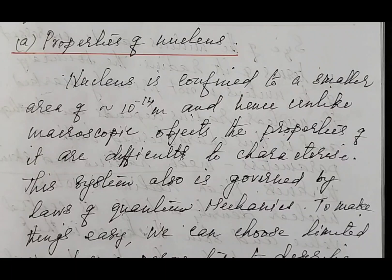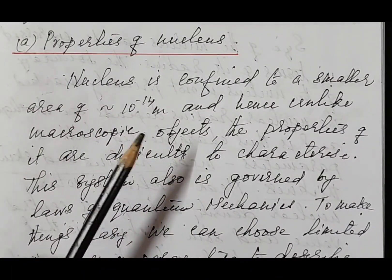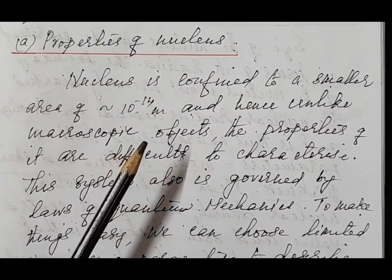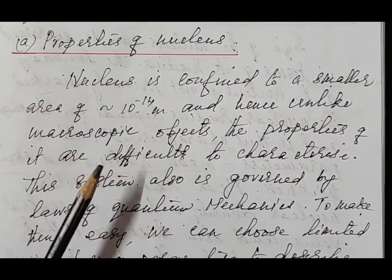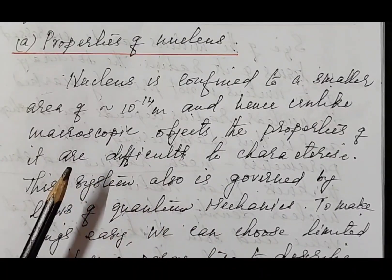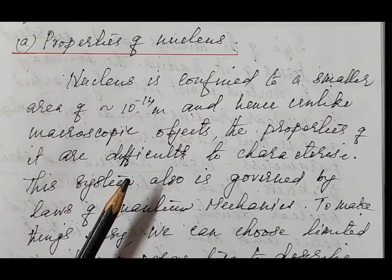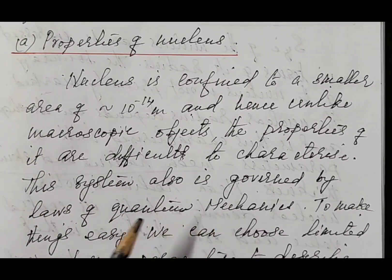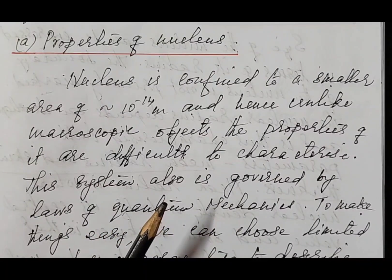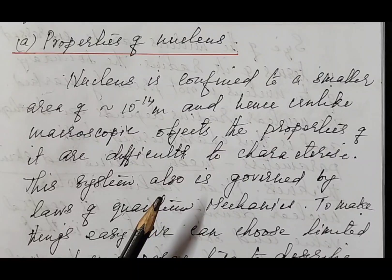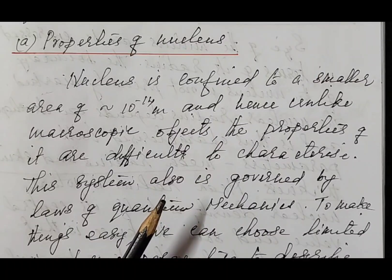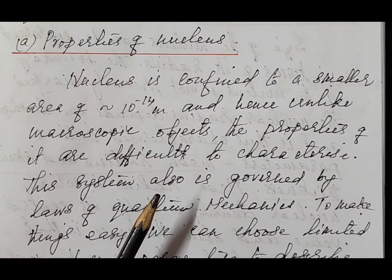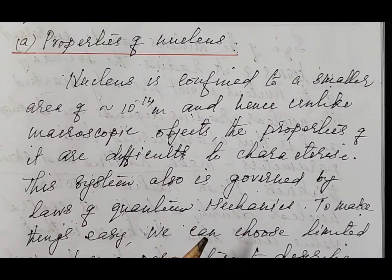The nucleus is confined to a very small area of nearly 10 raised to minus 14 meters, and hence unlike macroscopic objects, the properties of it are very difficult to characterize. The system is also governed by laws of quantum mechanics. So even though the nucleons are confined to a very small area of 10 raised to minus 14 meters, all the interactions between them and all the energy transactions are governed by laws of quantum mechanics.